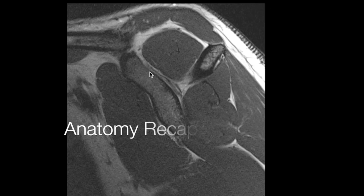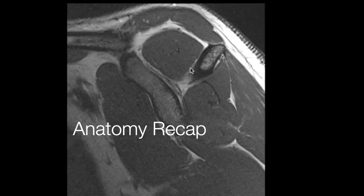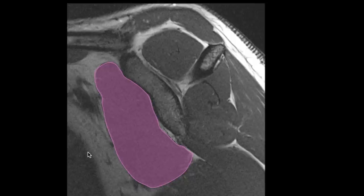This is a proton density sagittal image of the shoulder showing the four rotator cuff muscles. This is the glenoid with the coracoid process and this is the spine of the scapula, so this is anterior and this is posterior. Between the coracoid process and the spine of the scapula is the supraspinatus fossa which contains the supraspinatus muscle. Anteriorly you have the subscapularis muscle. Posteriorly there are two muscles.